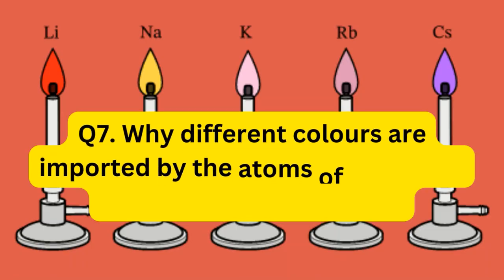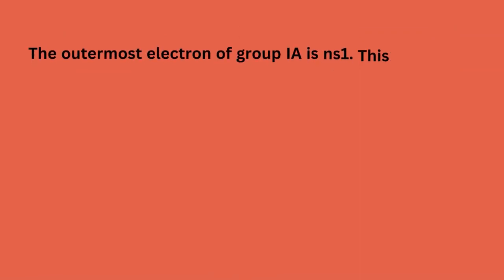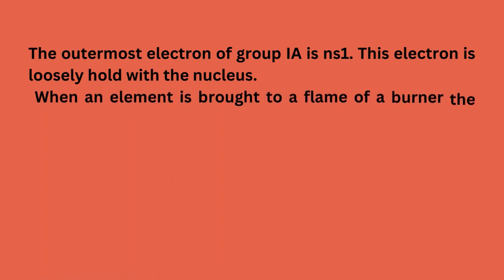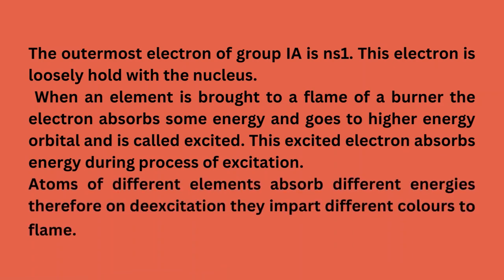Question 7: Why do atoms of group 1A metals impart different colors to the flame? The outermost electron of group 1A is ns1. This electron is loosely held with the nucleus. When an element is brought to the flame of a burner, the electron absorbs some energy and goes to a higher energy orbital — it is called excited. Atoms of different elements absorb different energies, so on de-excitation they impart different colors to the flame.